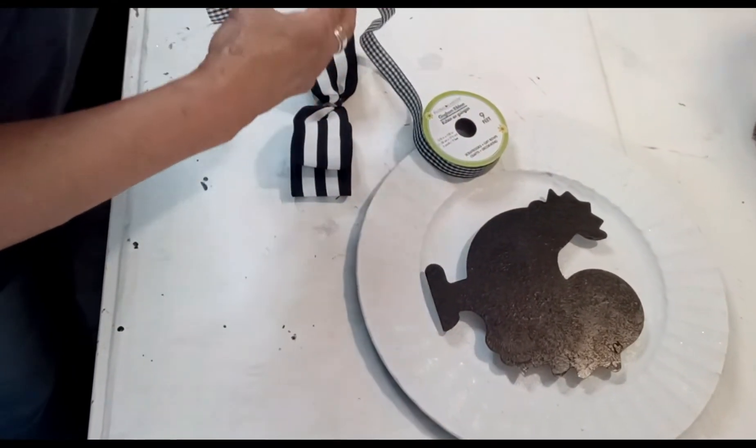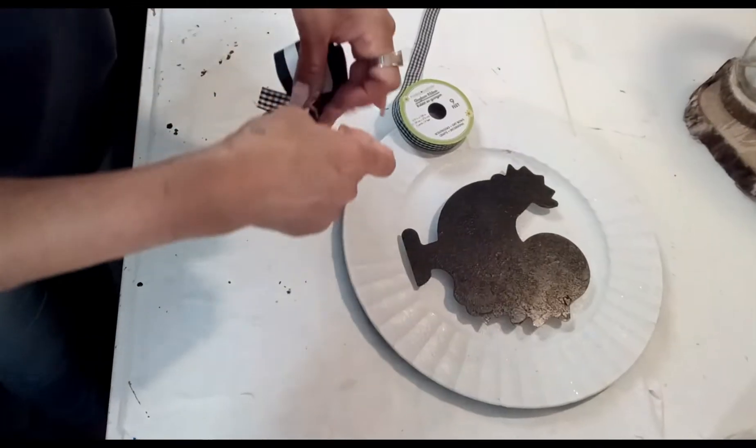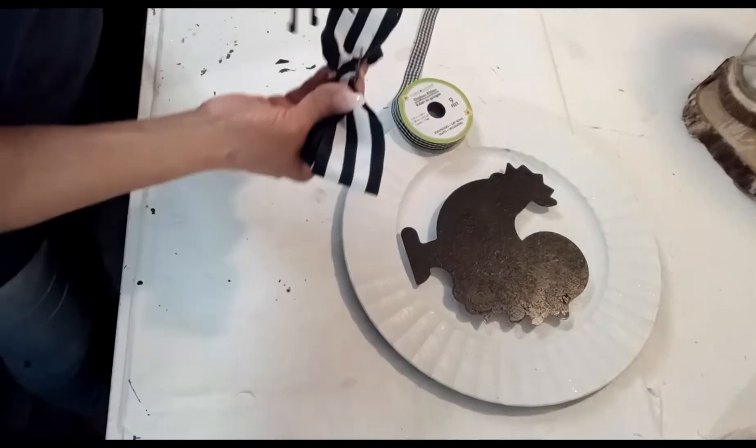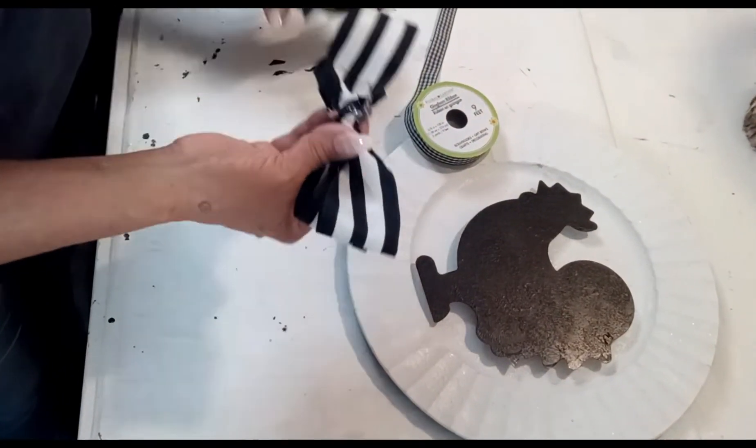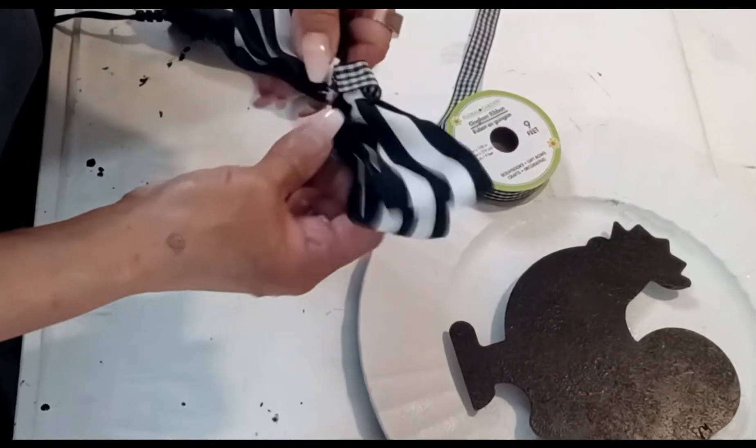With this checker ribbon, I'm going to put it right here in the middle with a little bit of hot glue. Before I glue the ribbon, I'm going to distress the plate.